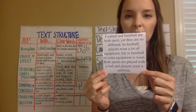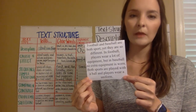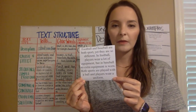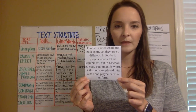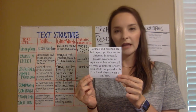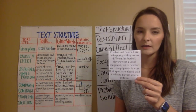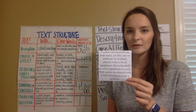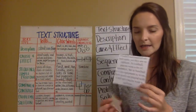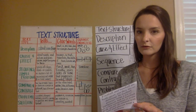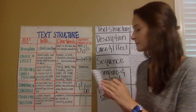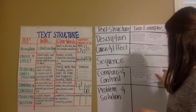Next card: Football and baseball are both sports, yet they are so different. In football, players wear a lot of equipment, but in baseball no extra equipment is worn. Both sports are played with a ball and players wear a uniform. We're learning all the ways football and baseball are alike and different — so this is compare and contrast. They both have uniforms and both use a ball, but in football you wear extra equipment and in baseball you do not.